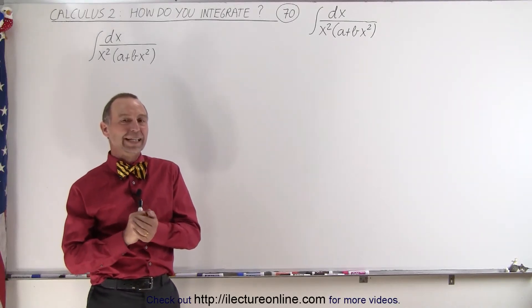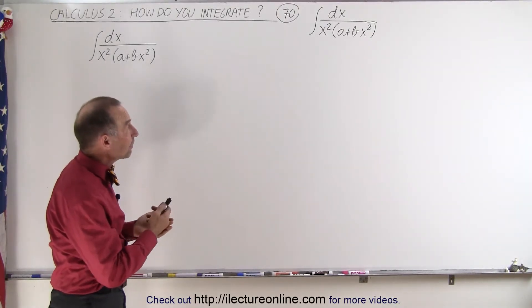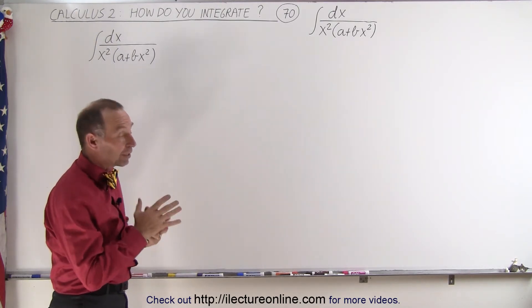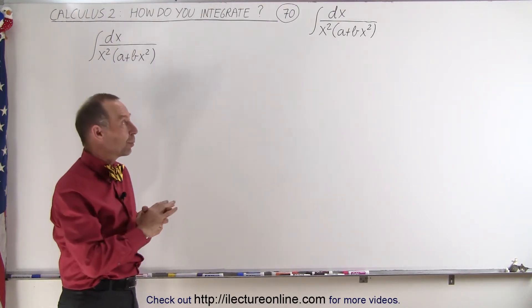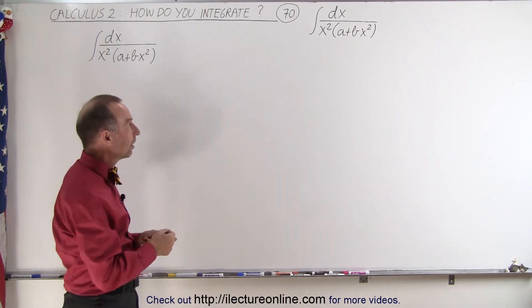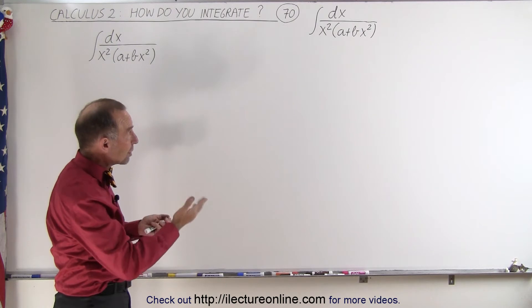Welcome to I Lecture Online. In this example, in the denominator we have an x squared instead of just an x. But the methodology compared to the previous example will be exactly the same. We're going to use partial fractions. Of course, in this case, we're going to need three fractions.